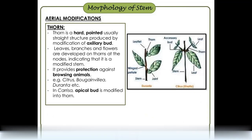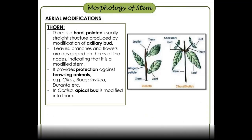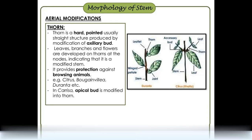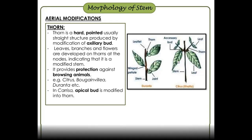This axillary bud develops into leaves, branches, and flowers. The thorn is a stem in this form — it is a protection against animals. Examples include Bougainvillea, Duranta, and Citrus.